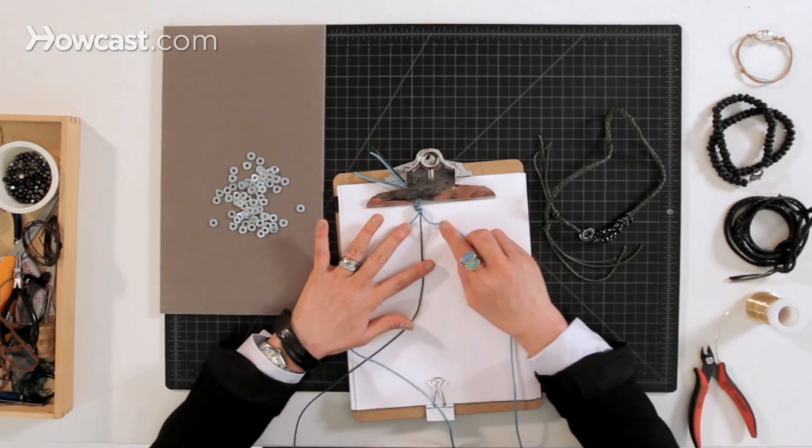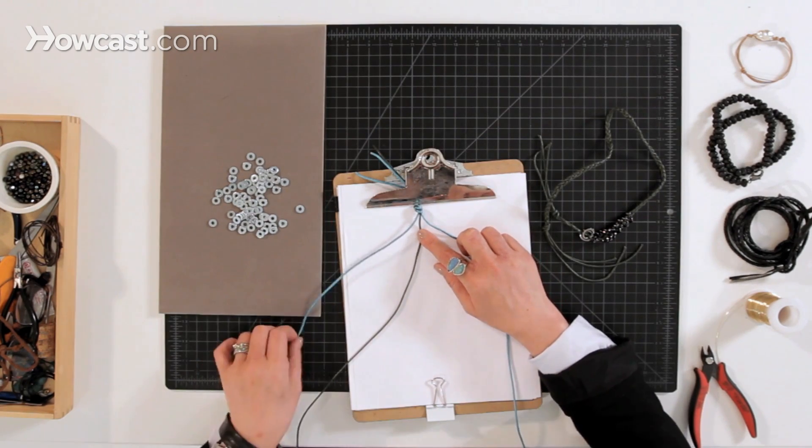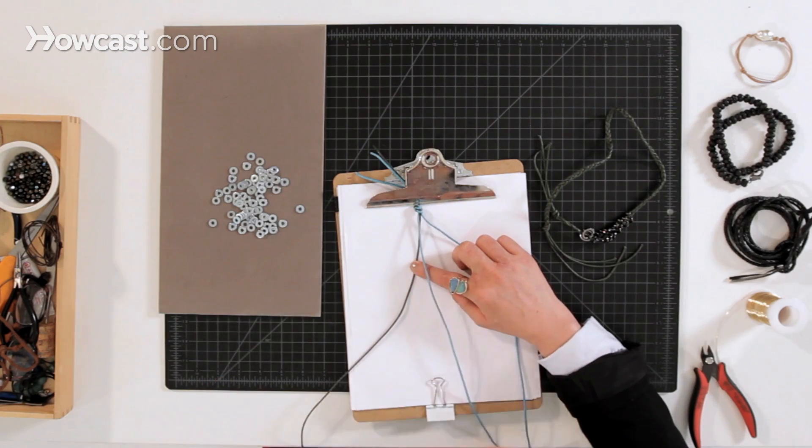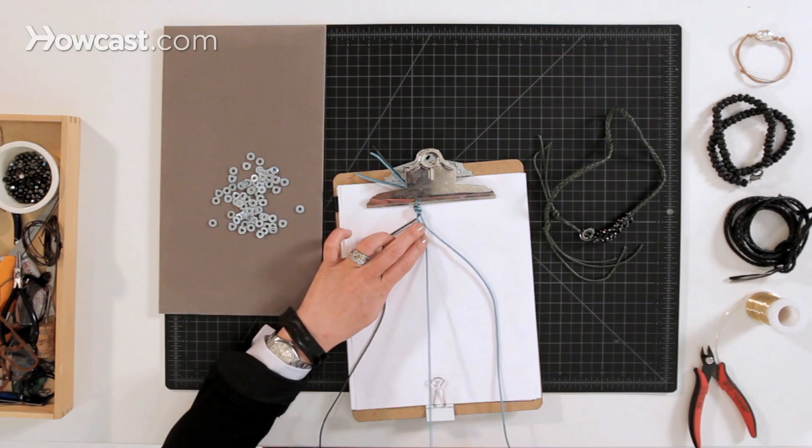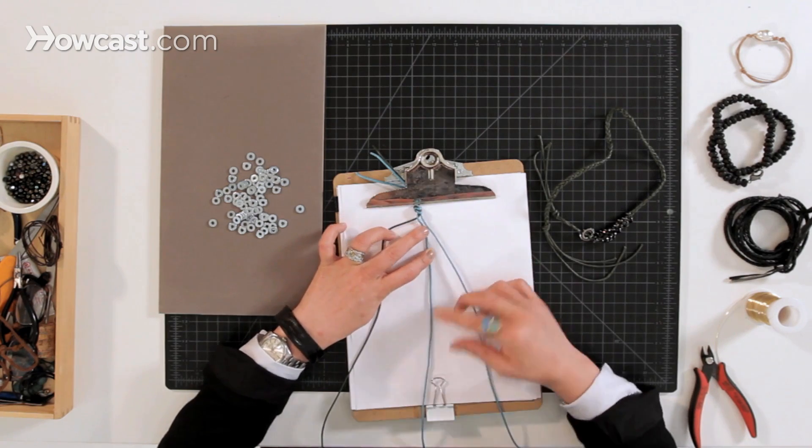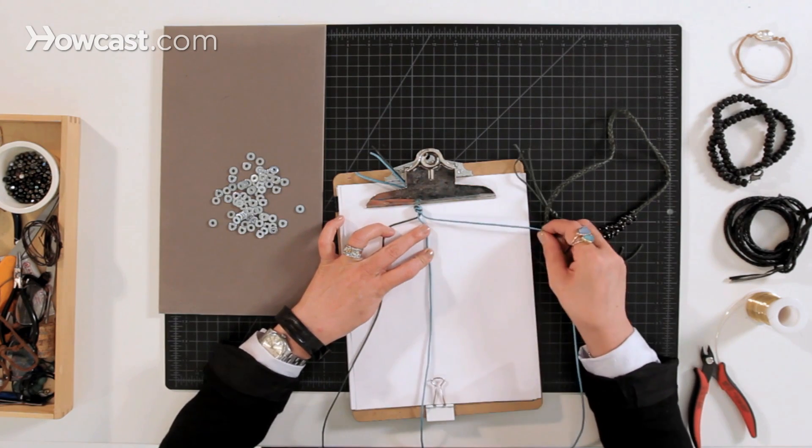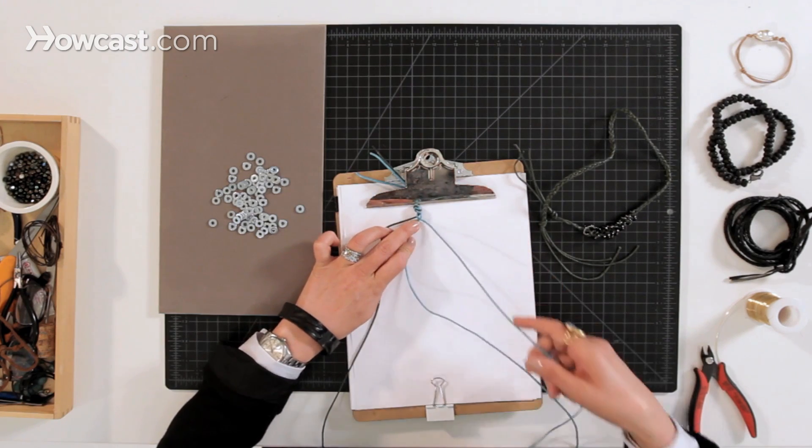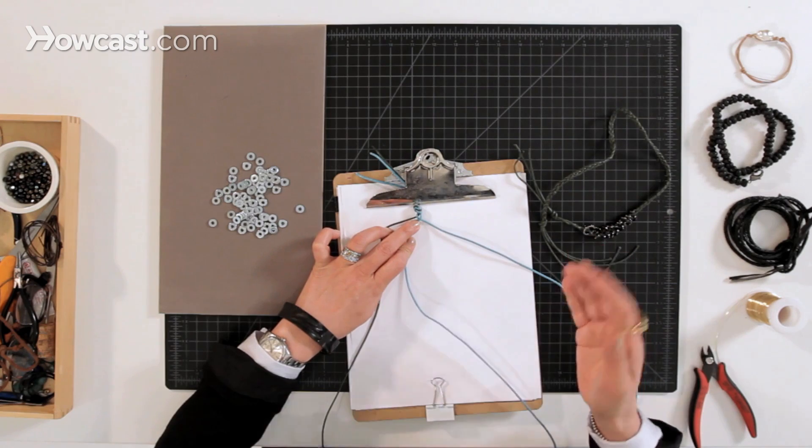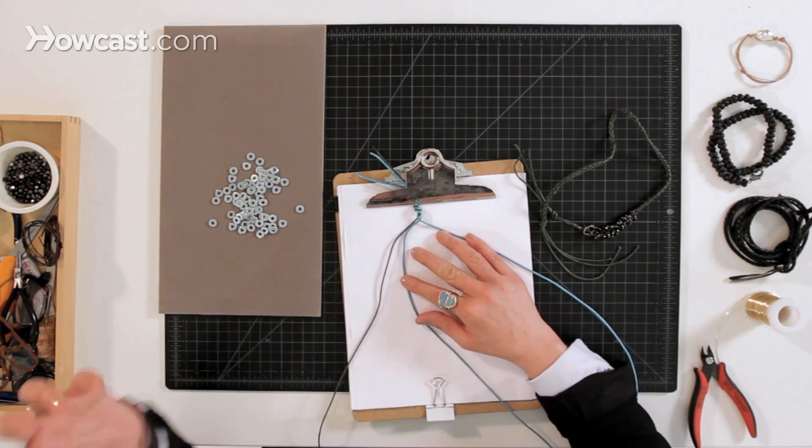So you separate the three strands and we're going to take the left strand over the center strand. So the left strand is now your center strand and then you're going to take your right strand over your new center strand. So basically it's just moving from one side to the middle and then the other side to the middle.